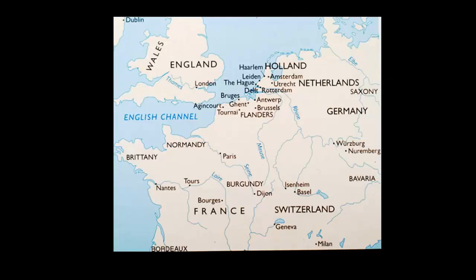We'll be focusing on Northern Europe, looking at monuments produced in the area called Flanders, which is now modern-day Belgium and part of France. We'll also be looking at works from what we now call Holland or the Netherlands, in addition to some works produced in England. For the Northern Renaissance we want to think about a span starting at about 1380 to the late 16th century, about 1580 — 200 years — encompassing several regions north of Spain and Italy.